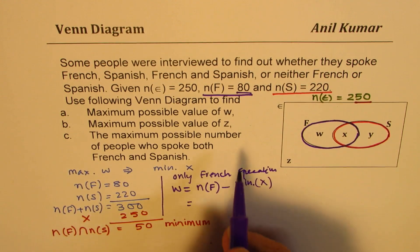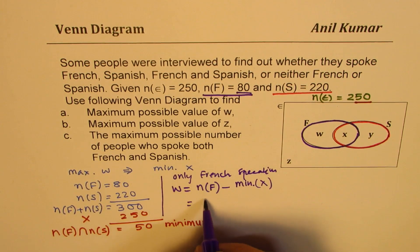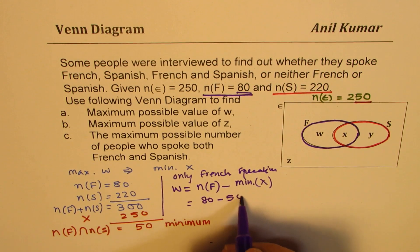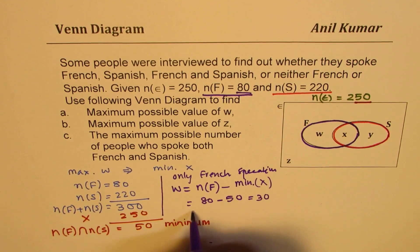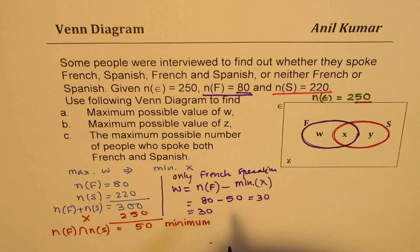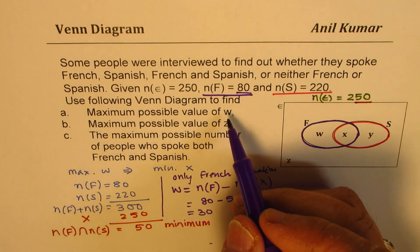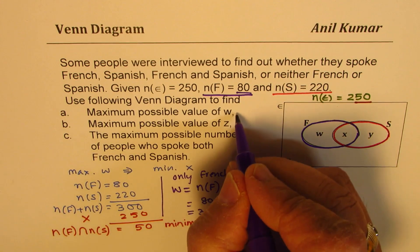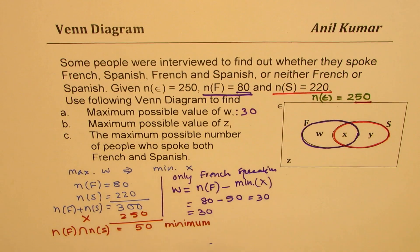So that is 80 minus 50, and that gives you 30. So this answer is 30. The maximum possible value of W could be 30. So we got one answer.